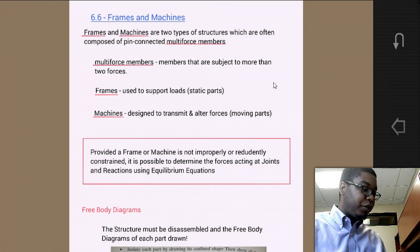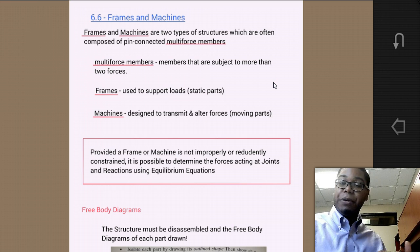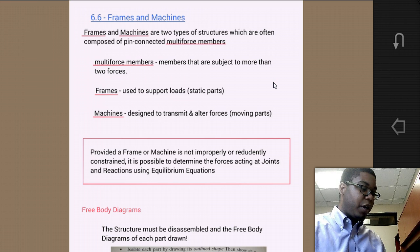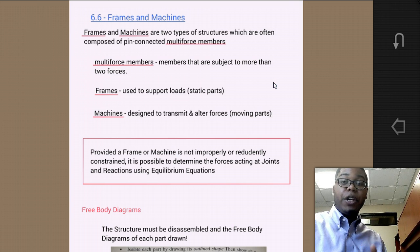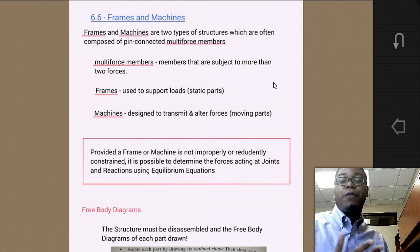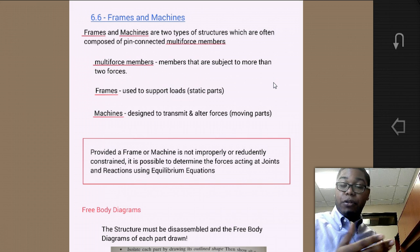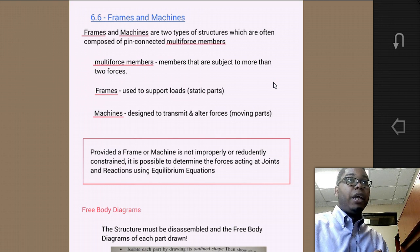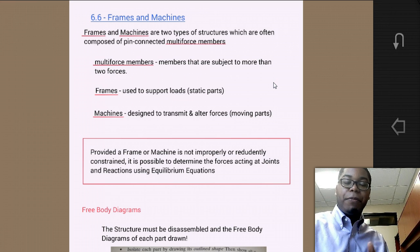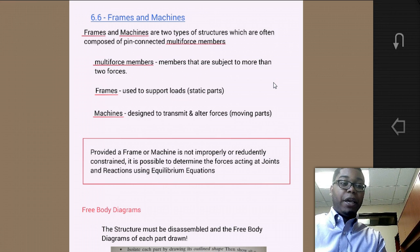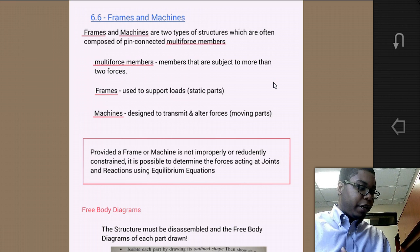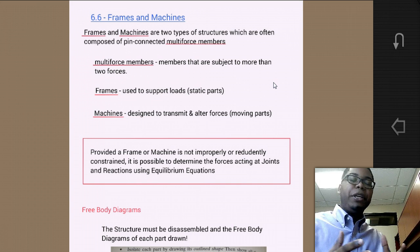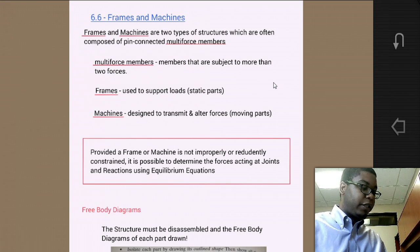So, Frames and Machines are two types of structures which are often composed of pin-connected multi-force members, where a multi-force member is a member that is subject to more than two forces. Frames are things that are used to support loads. They're typically static parts. You can think of a frame as the framing of a bridge, a truss system, a roof structure. A frame could also be something like the frame of a crane, a large crane that is used in construction processes. It's typically an assembly of members which are used to support static parts.